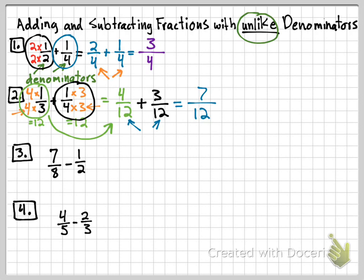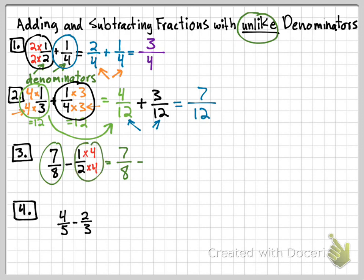On the bottom, we're subtracting these fractions: seven-eighths minus one-half. In this case, I know that I can make this two into an eight if I multiply it by four. So I'm going to multiply that by four and the top by four — I always have to multiply the top and bottom by the same number. The first fraction stays as seven over eight. In this part, one times four is four, and two times four is eight. Now I can see they have the same denominator, so I keep the denominator and subtract: seven minus four is three. The answer is three over eight.